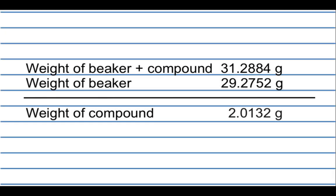The mass of compound is the difference between the beaker and compound mass and the mass of the empty beaker. You now know how to weigh by addition.